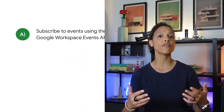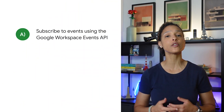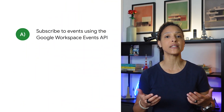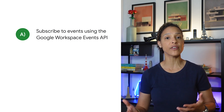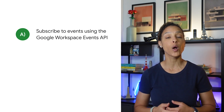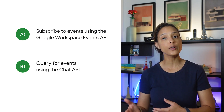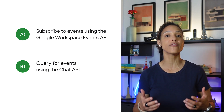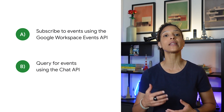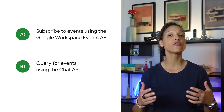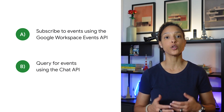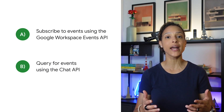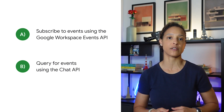To configure your chat app to receive events, you have two options to choose from. You can have your chat app subscribe to events using the Google Workspace Events API to receive events as they occur, or your chat app can query for recent events by calling the Chat API. If you've built your chat app using App Script, you can use the Chat API Advanced Service.